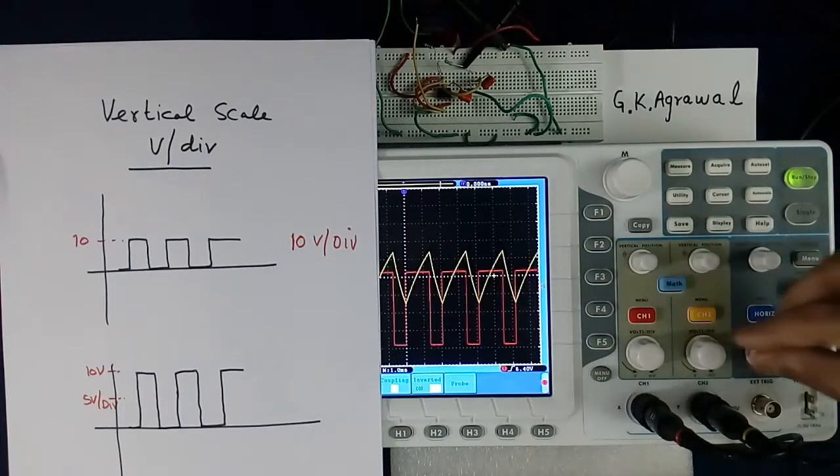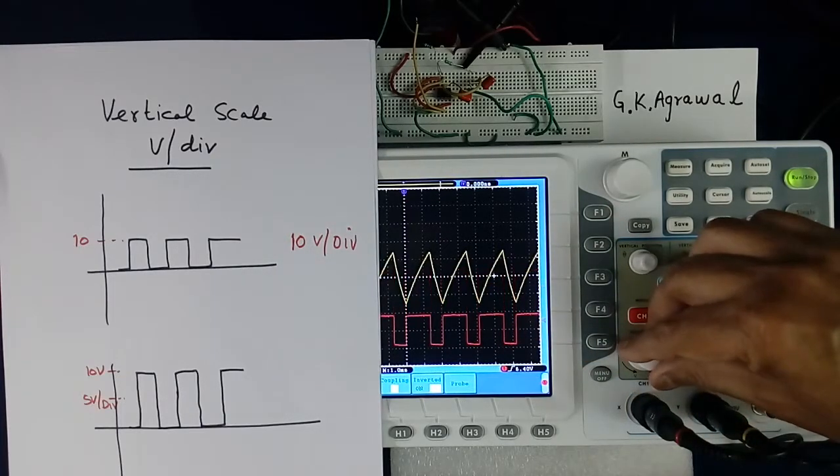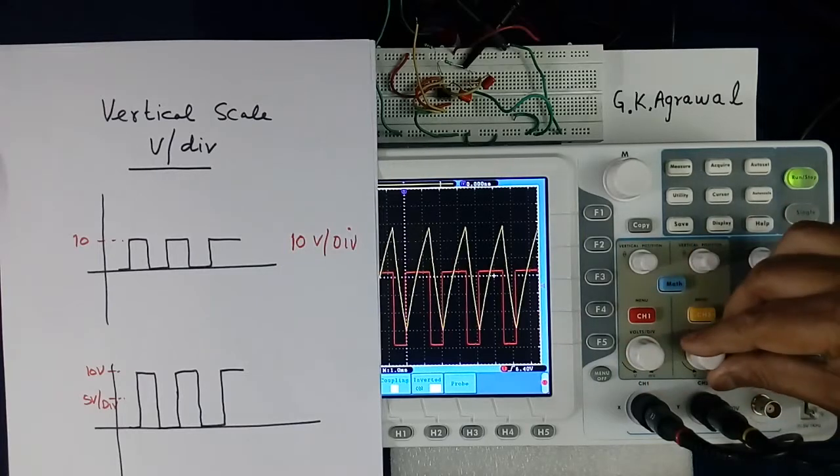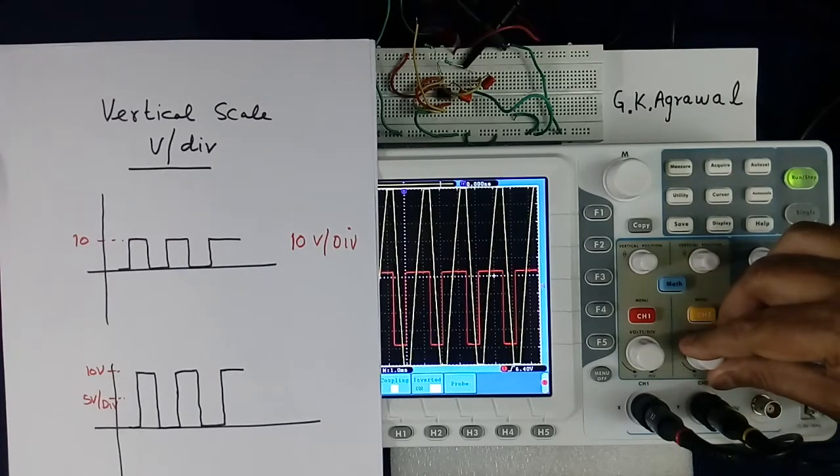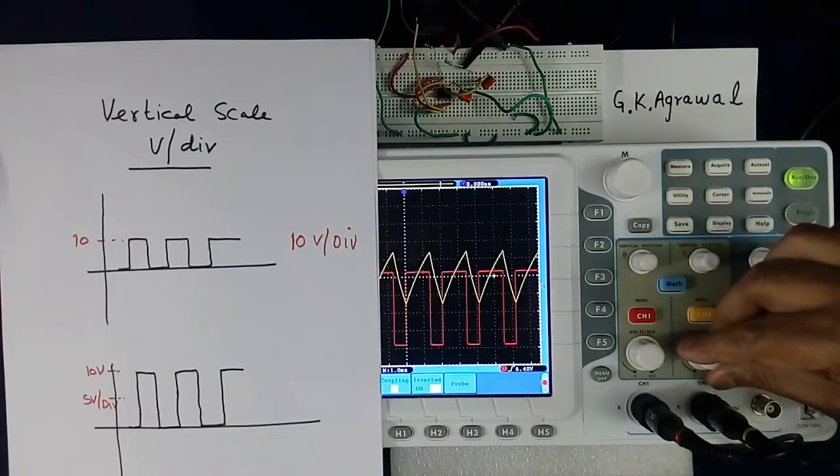Similarly yellow one, second channel. Both separate we can select. This is one, this is another. See yellow second channel, I am controlling Y scale, volt per division.